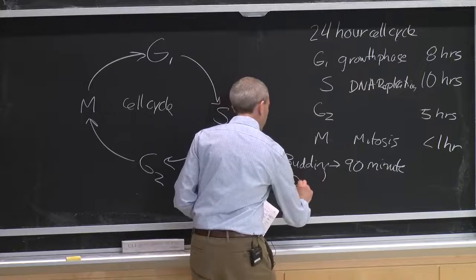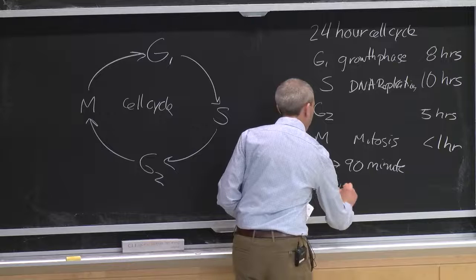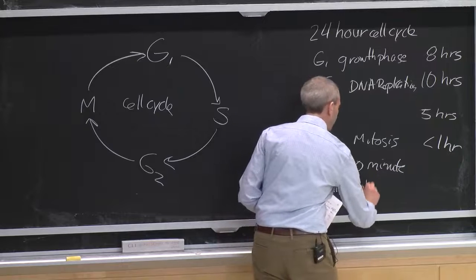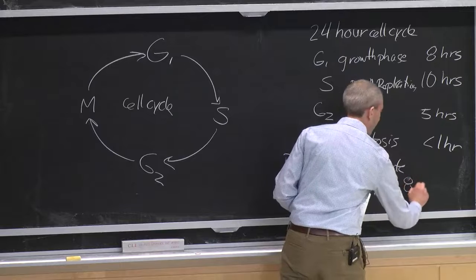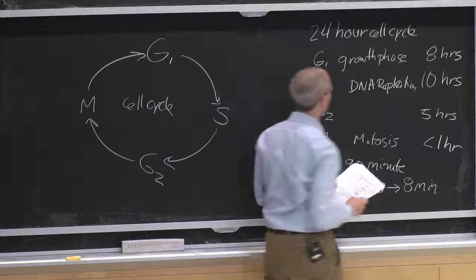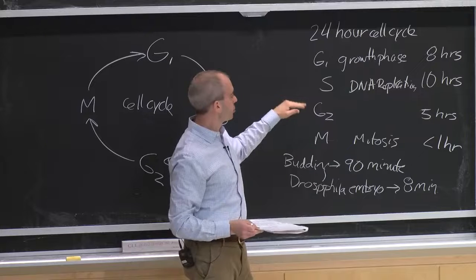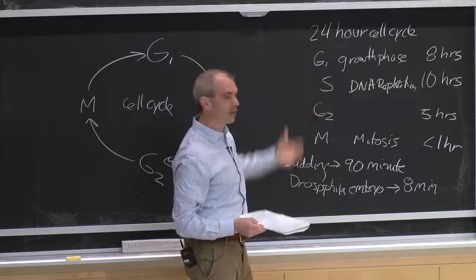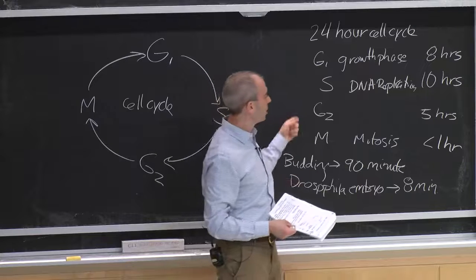And one of the things I find particularly remarkable is that, for example, drosophila embryos, when they are dividing rapidly early, you can have an entire division process happen in eight minutes. And this includes all of the DNA replication and all of the mitotic divisions. In the drosophila embryo, you're not really having these growth phases because you're starting with a large egg that's getting smaller and smaller as you divide.